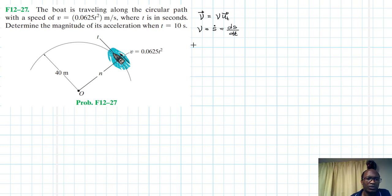And we've been told that our v in our case here is already given as 0.0625 t squared. So we already have this.